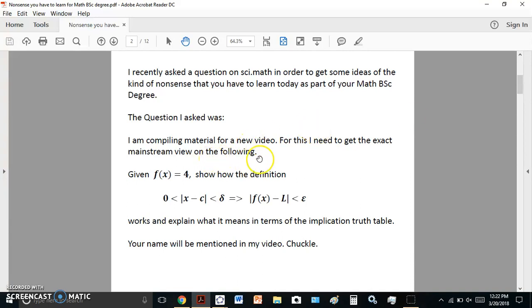I'm compiling material for a new video. For this, I need to get the exact mainstream view on the following. Given that equation, show how the definition works and explain what it means in terms of the implication truth table.